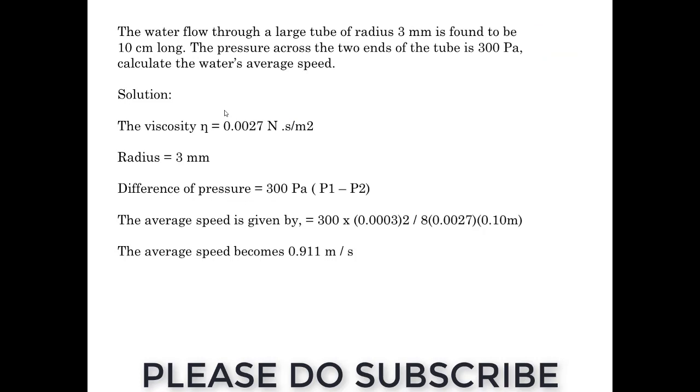Water flows through a glass tube of radius 3 mm. It is found to be 10 cm long. The pressure across the two ends is already given, that is 300 Pascal. Now we need to calculate the water average speed. It is clearly mentioned on the screen. It is a simple problem.